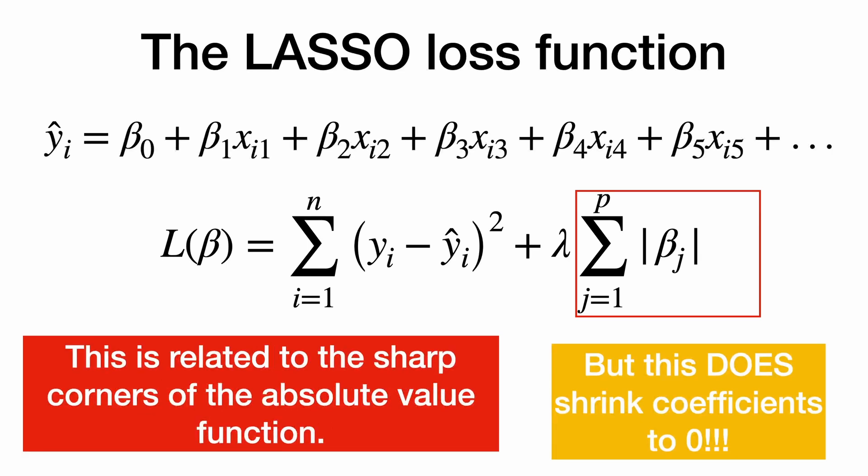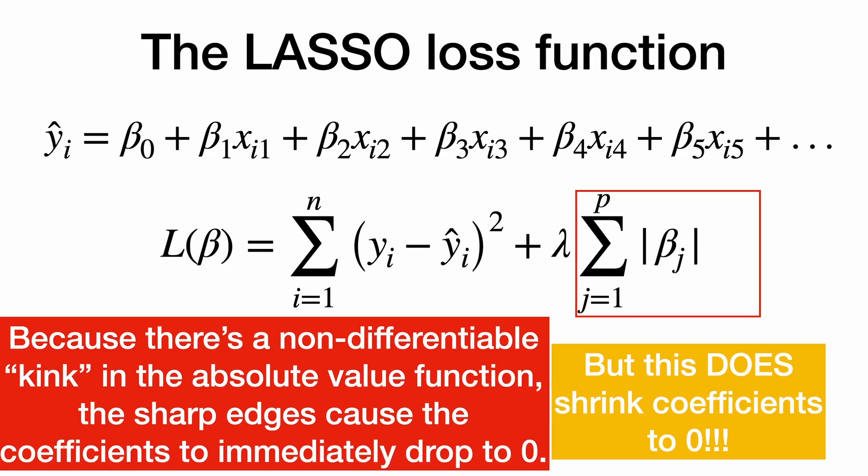Yee-haw! This is related to the sharp corners of this absolute value function. And because there's a non-differentiable kink in the absolute value function, the sharp edges cause the coefficients to immediately drop to zero.